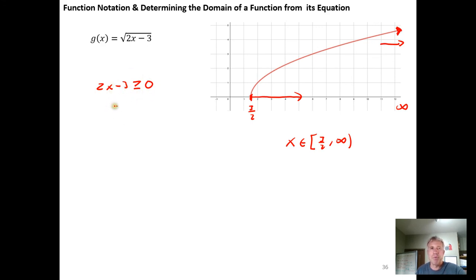Adding 3 to both sides, we get 2x ≥ 3. Then dividing both sides by 2, we get x ≥ 3/2.